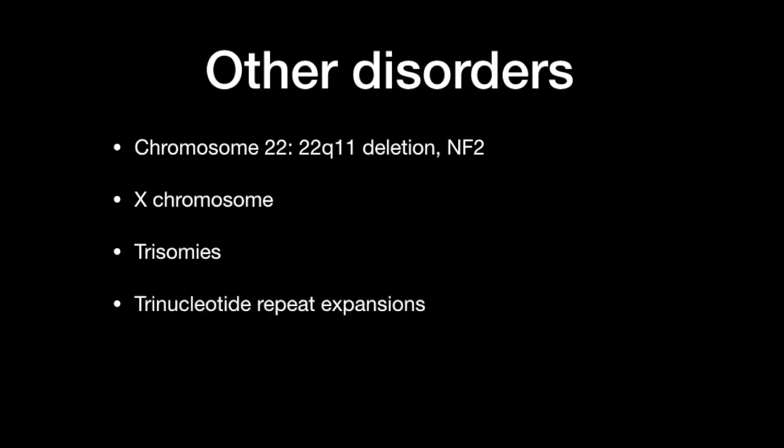Lastly, I did not mention the trinucleotide repeat expansions — there is a better way to remember these and I may cover them in another video. Just so they're mentioned: Huntington's disease is on chromosome 4, Friedreich's ataxia on chromosome 9, myotonic dystrophy on chromosome 19, and fragile X syndrome is on the X chromosome. And that covers all of the disorders and chromosome numbers you need to know for Step.